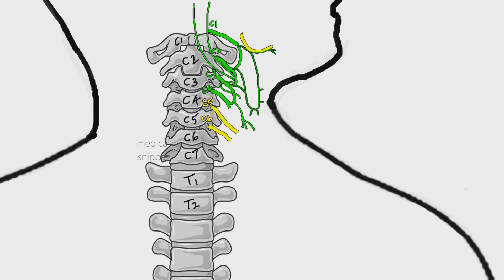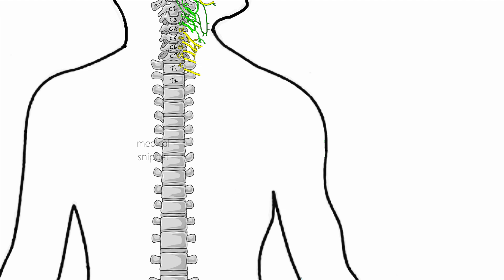The brachial plexus is formed from the ventral rami of the lower four cervical spinal nerves and first thoracic spinal nerve. The brachial plexus supplies motor and sensory innervation to the upper limb.